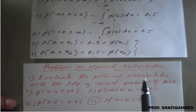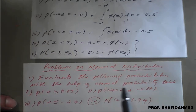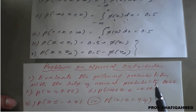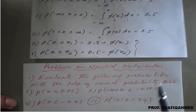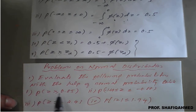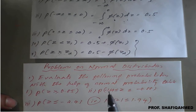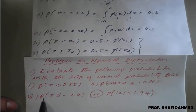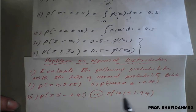Evaluate the following probabilities with the help of the normal probability table. I will show you the probability table and also use the calculator to get values. The questions are: (1) P(Z ≥ 0.85), (2) P(-1.64 ≤ Z ≤ -0.88), (3) P(Z ≤ -2.43), and (4) P(|Z| ≤ 1.94).